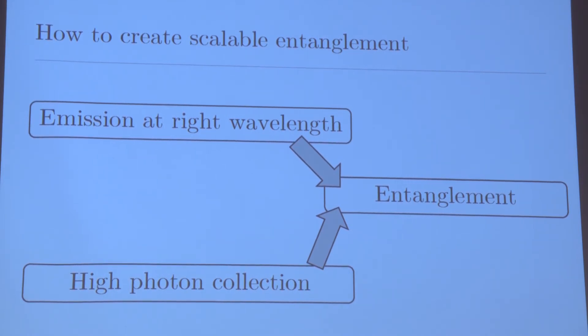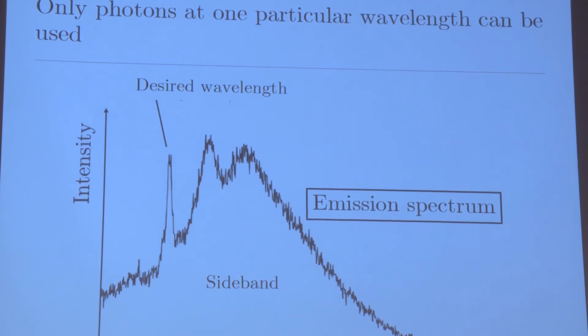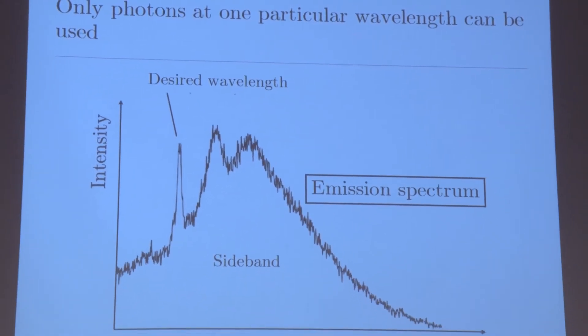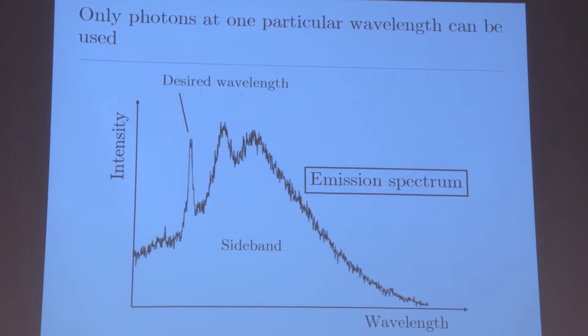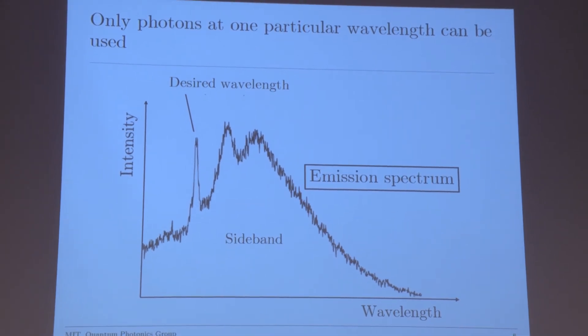Let's start with fixing the first issue. We can actually force the emission into the right wavelength. The emission at the right wavelength is a particular issue for the NV center, because if you look at the emission spectrum, which plots wavelength against intensity, meaning the number of photons emitted, you see that a lot of the emission goes into the sideband instead of the desired wavelength, which we need for quantum computation.